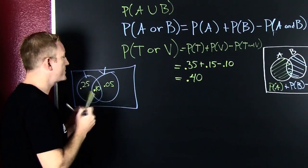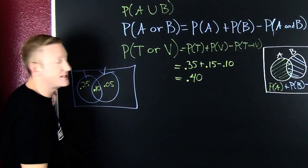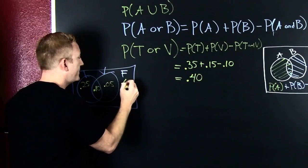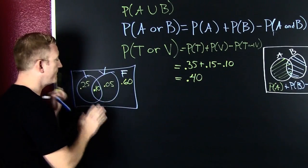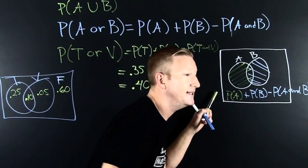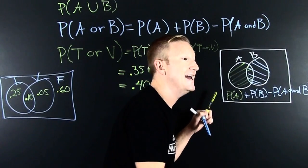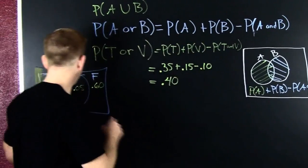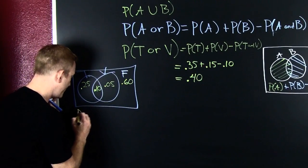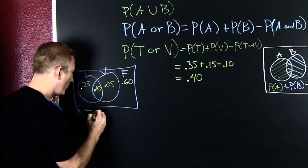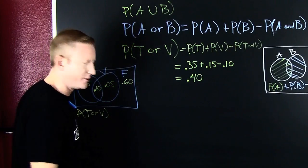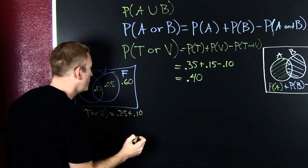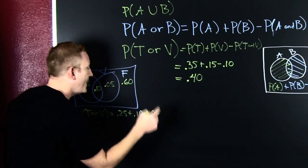If we look at the complement of these events, there's a 60% chance that she gets off scot-free. Using this idea that we can add the Venn diagram regions to get the probability that she will be ticketed or vandalized, the probability of ticket or vandalism is 0.25 plus 0.10 plus 0.05, and we see that's 40% chance of being ticketed or vandalized.